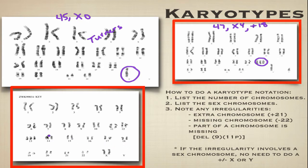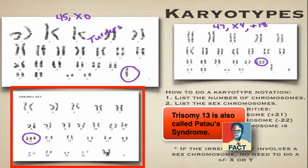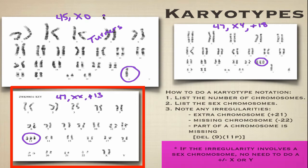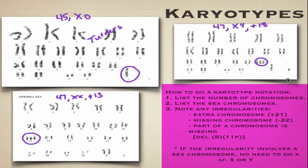Looking at this next individual, you've got three of chromosome 13 and two X chromosomes, so this individual would be 47XX plus 13 — it's a girl. Because the upper-left karyotype was missing a sex chromosome and you could see which one was missing, we didn't have to put minus Y or minus X. Pay attention to the directions here on how to notate a karyotype.